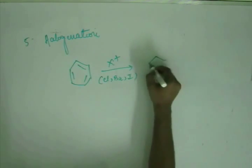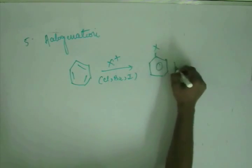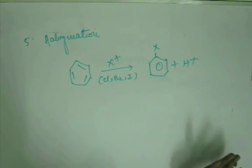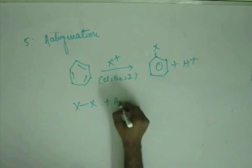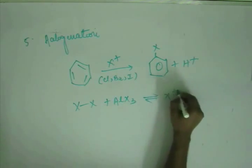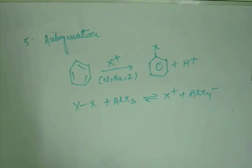Now if we do it, then this X will be added on benzene and X plus will be gone. So X plus is going to substitute H plus. This will be a substitution reaction. Halogen is being added. This is called halogenation. Now the question is, how are we going to create X plus? And the answer is, if we take X2 and we take AlX3, then we get X plus and AlX4 minus. This is how we create X plus.